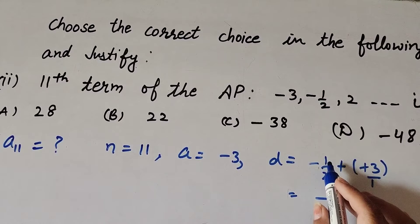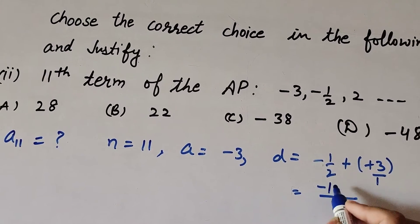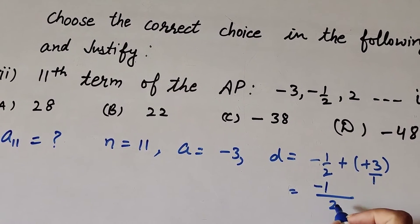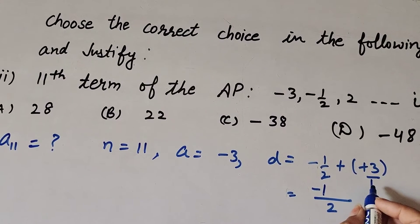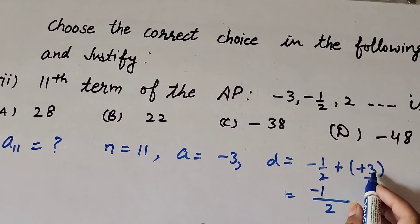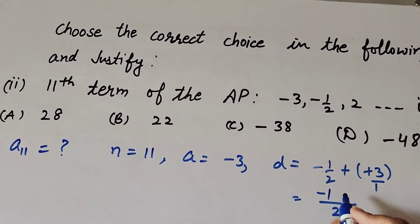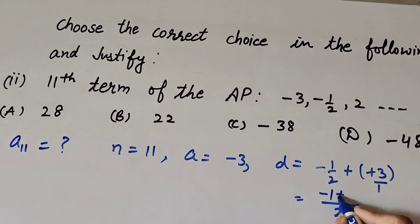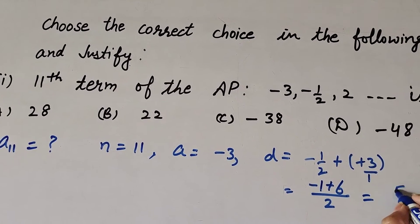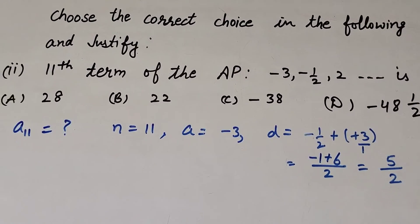Taking the LCM of the denominators: −1 + 6 over 2 equals 5 over 2. So the common difference d is equal to 5/2.